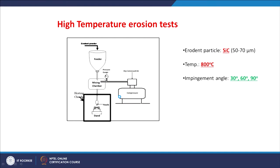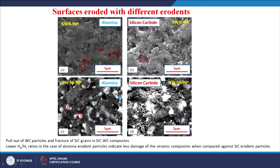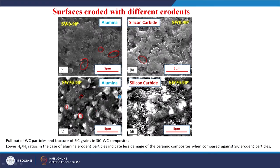We also performed the erosion study of the silicon carbide-tungsten carbide composites at high temperatures, because these composites are attractive materials for high-temperature erosion conditions. It is very interesting to understand the erosion behavior at high temperature. We used silicon carbide particles as the erodent because silicon carbide erodent gives the maximum erosion compared to alumina. The erosion was done at 800°C with a change in impingement angle.